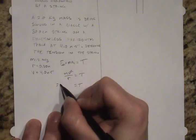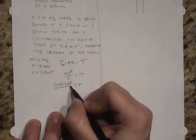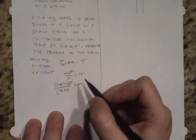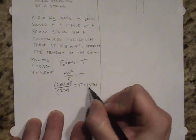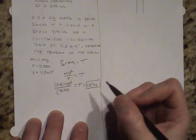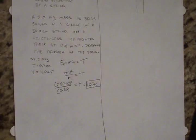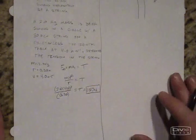So T is equal to 2.0 times 4.0 squared divided by 0.30, and this will produce a tension of 107 newtons. Now that's a pretty straightforward problem.